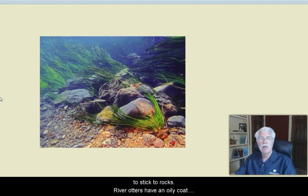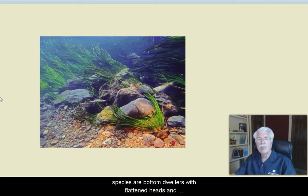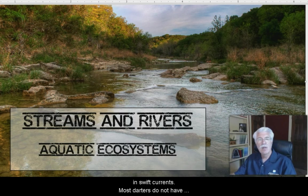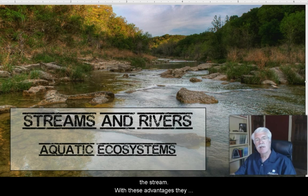Fish, such as shiners, have streamlined bodies that allow them to remain stable in currents. Catfish and many darter species are bottom dwellers with flattened heads and large pectoral fins angled to keep them on the bottom and stable in swift currents. Most darters don't even have swim bladders, which allows them to remain on the bottom of the stream. With all these adaptations, they can stay down low and feed, even in swift water.